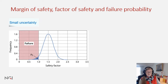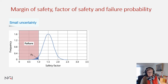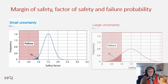About margin of safety, factor of safety, and failure probability. Here is a distribution of a safety factor with small uncertainties in the analysis parameters. The distribution is rather thin and the failure probability is represented by the blue area under the curve where the safety factor can be less than one.